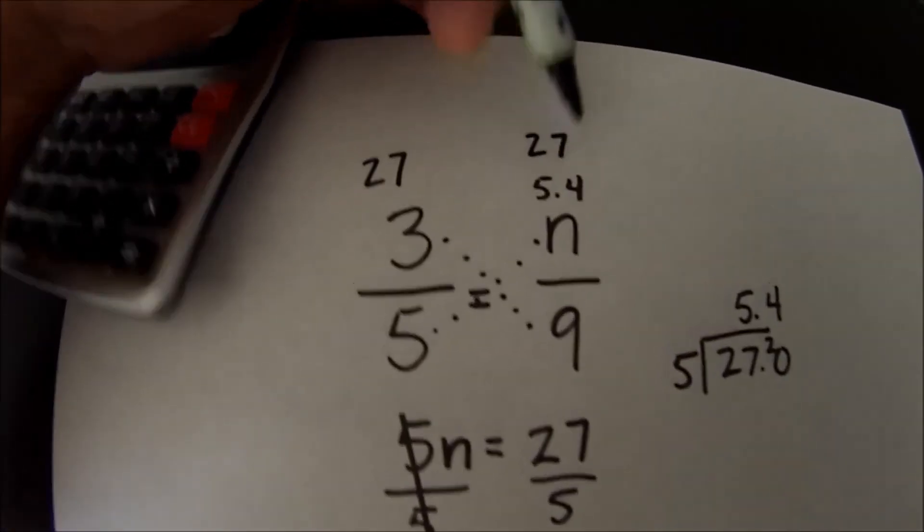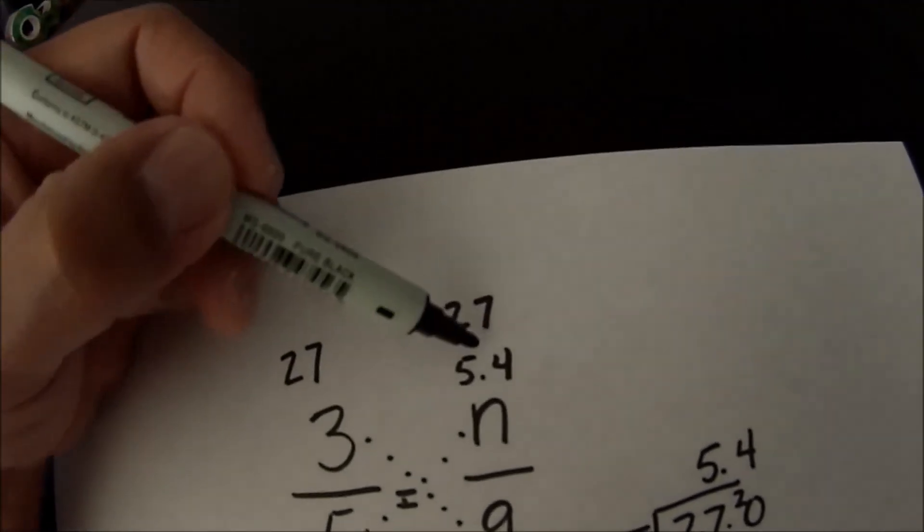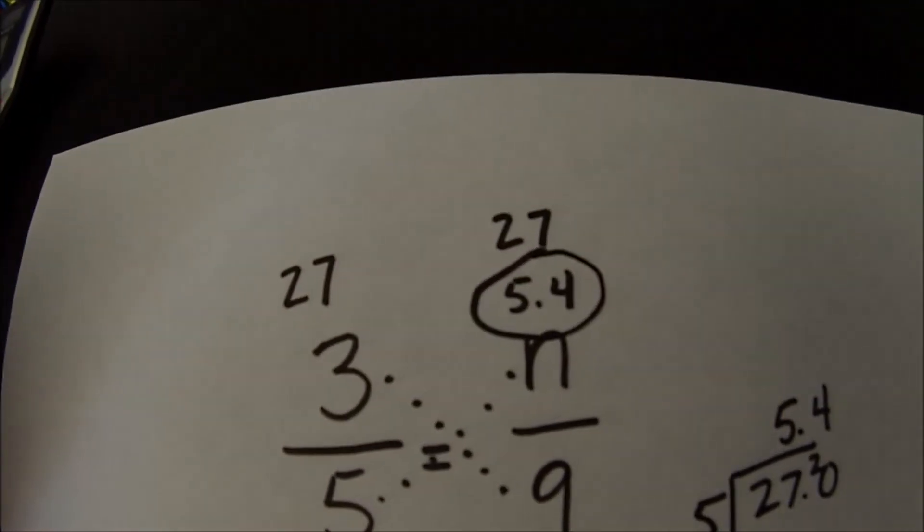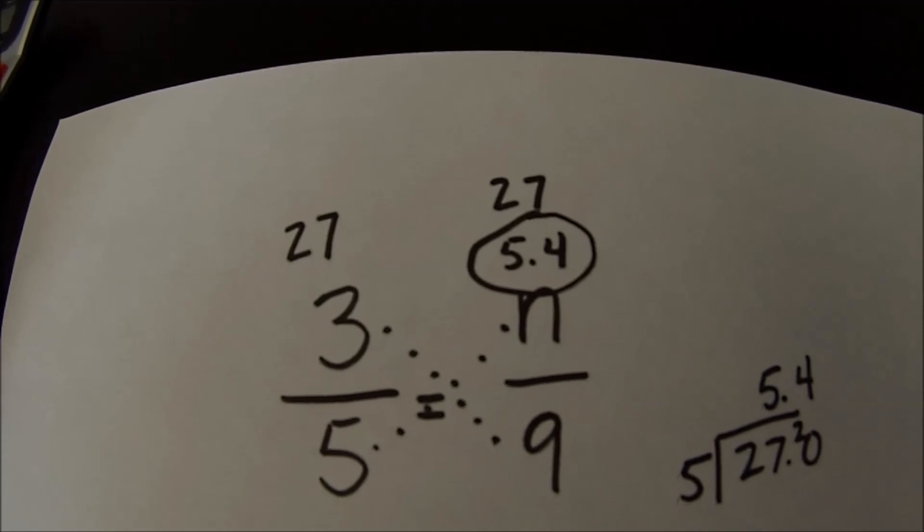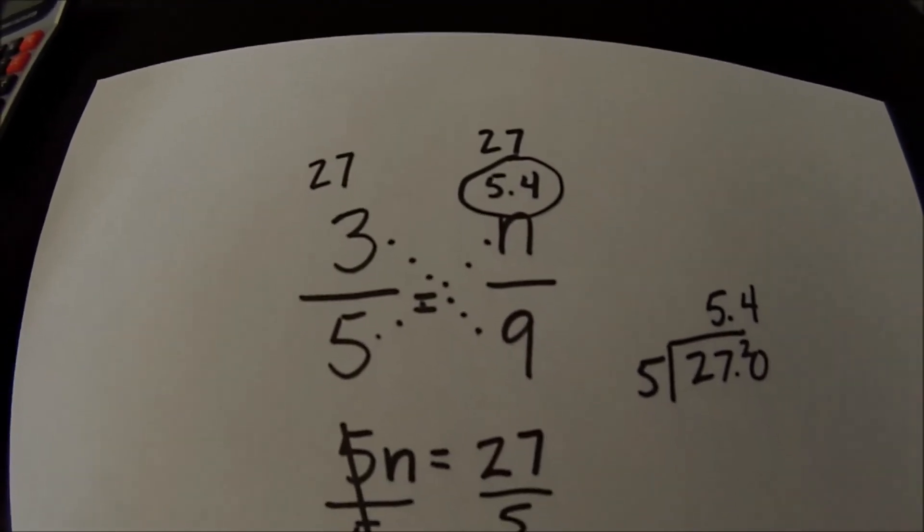So 27 is what we get from both sides so that's how I know that 5.4 is correct. So just a cool way to check to see that your proportion answer is correct. Thanks for watching and hope that was helpful.